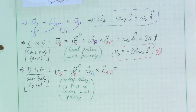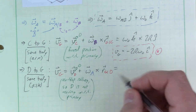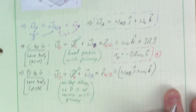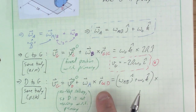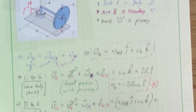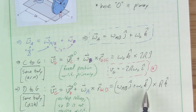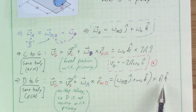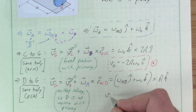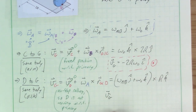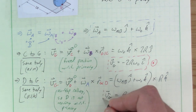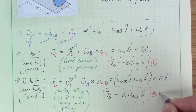k-hat crossed into k-hat is zero. j-hat crossed into k-hat is positive i-hat. So v_G = r·omega_{A/B} i-hat. This is our second expression for v_G. Setting the two expressions equal: minus 2r·omega-naught = r·omega_{A/B}, giving omega_{A/B} = minus 2·omega-naught.